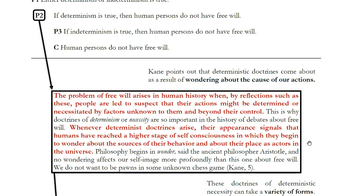Another interesting point Cain makes is that determinist doctrines appear only because human beings have reached a higher stage of self-consciousness — a stage where we wonder, 'Why do I act the way I act?' If you believe you have free will, why do you believe that? For many people, the reason is just that in the moment we don't feel constrained. Right now I'm recording this lecture, but I have a real sense that if I wanted to, I could put down this microphone, turn off the computer, and leave the room.